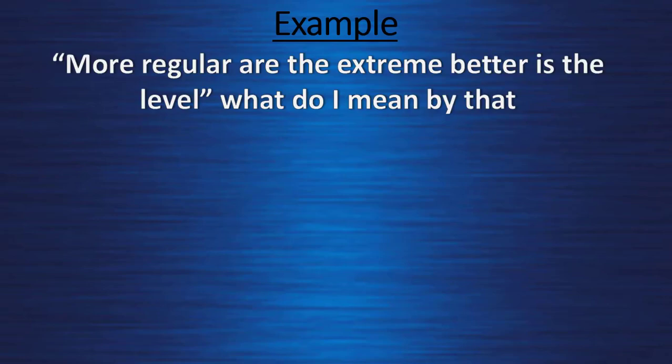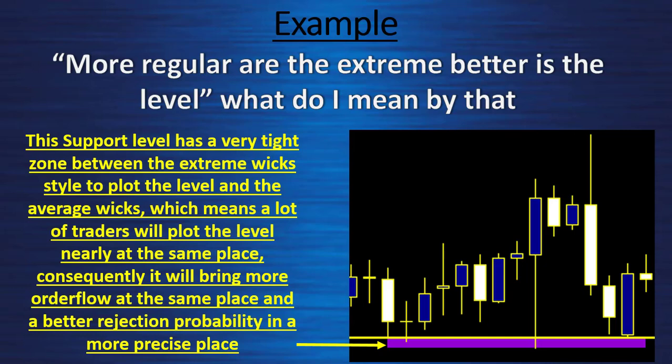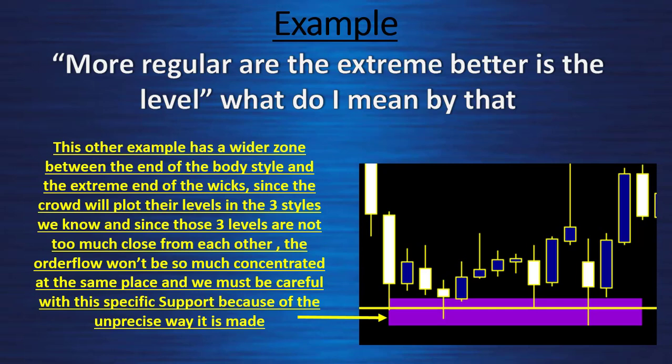When I say 'more regular the extremes, better is the level,' what do I mean? I mean this support level has a very tight zone between the extreme wick style and the average wick style of plotting the level, which means a lot of traders will plot their level nearly at the same place. Consequently, it will bring more order flow at the same place and a better rejection probability in a more precise area. Another example has a wider zone between the end-of-body style and the extreme wick style, and since the crowd will plot their level in the three styles, the order flow won't be so much concentrated at the same place — we must be careful with this support because of the imprecise way it is made.